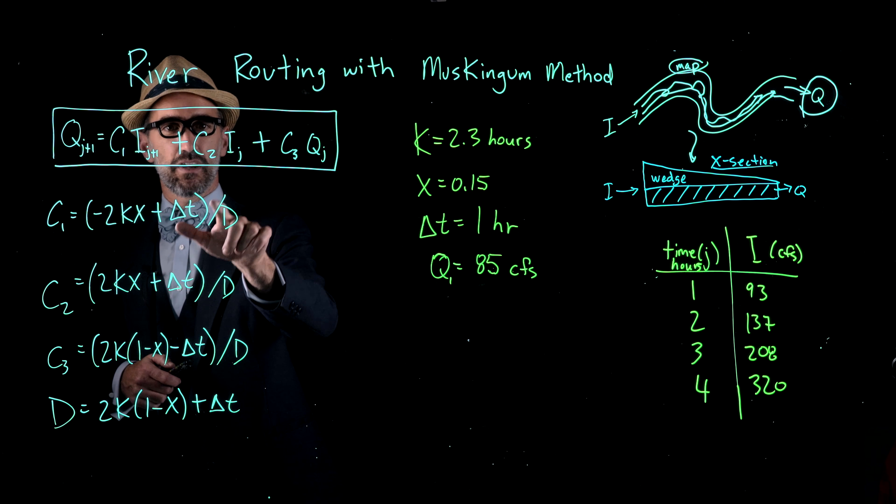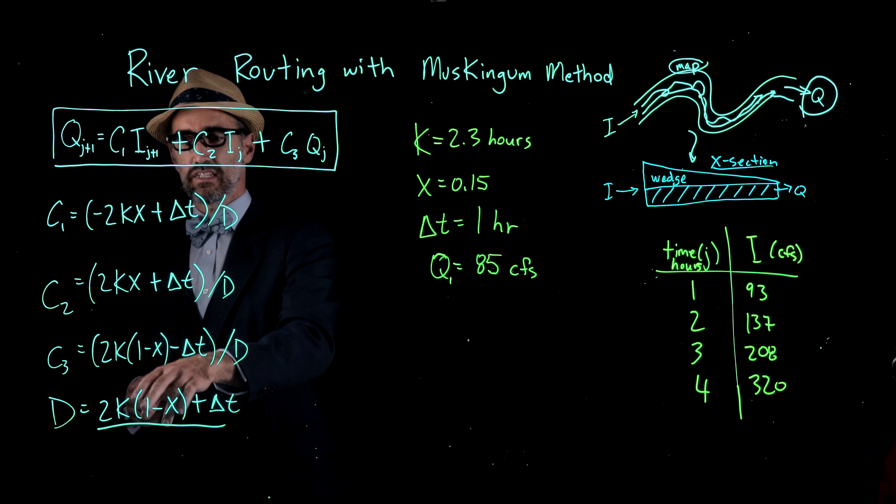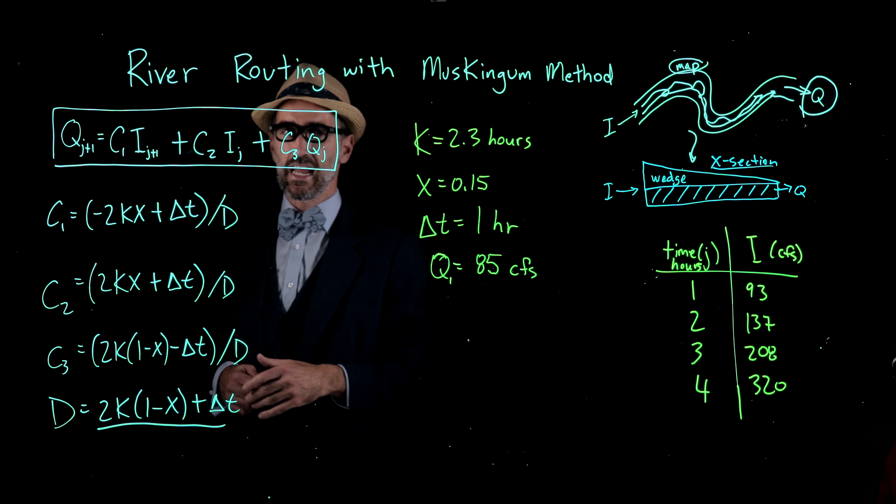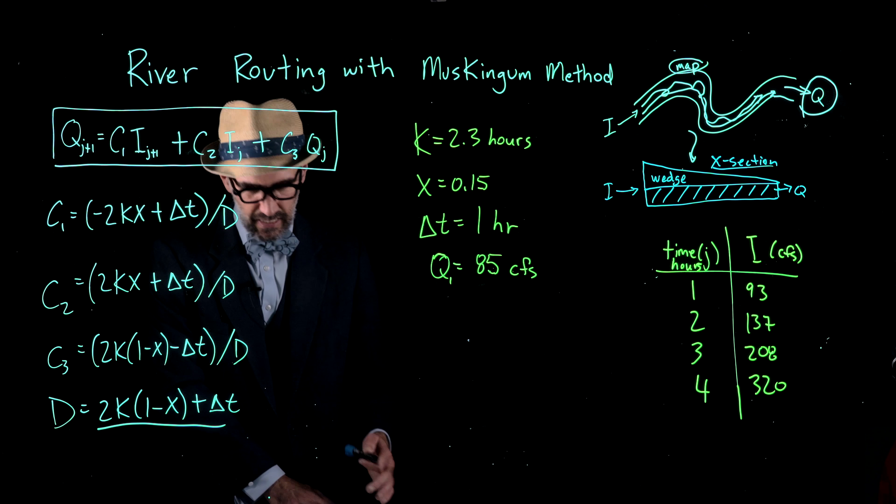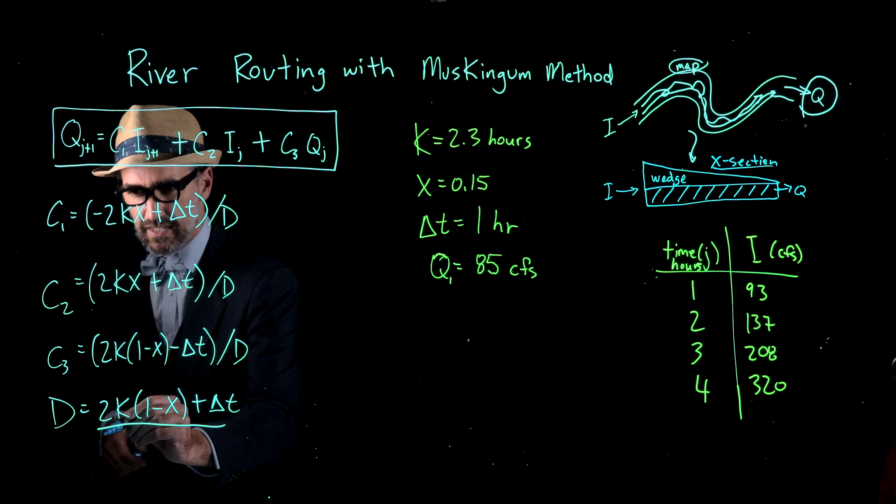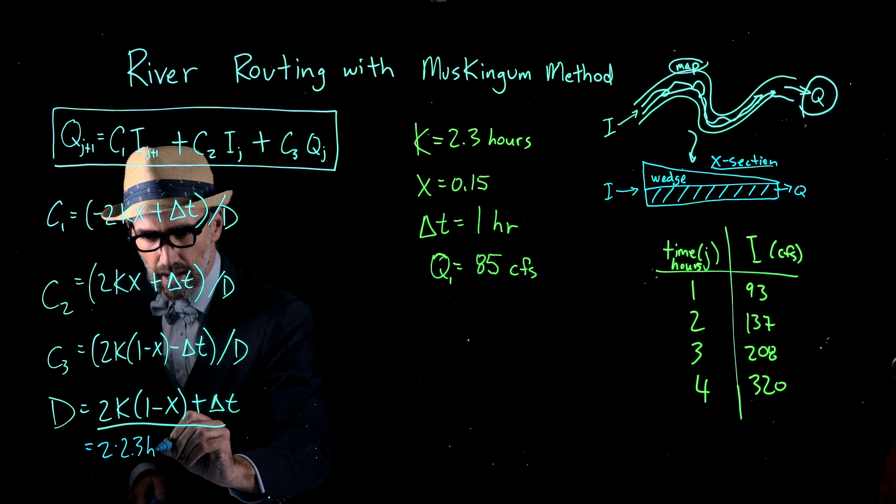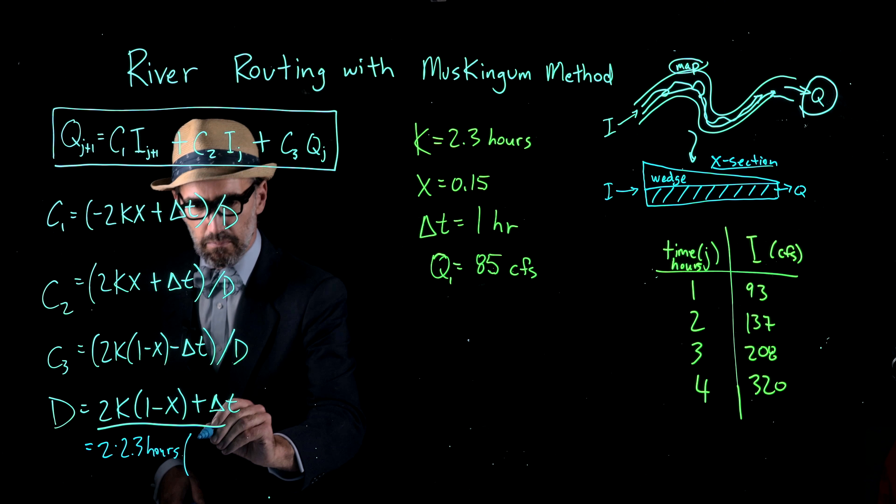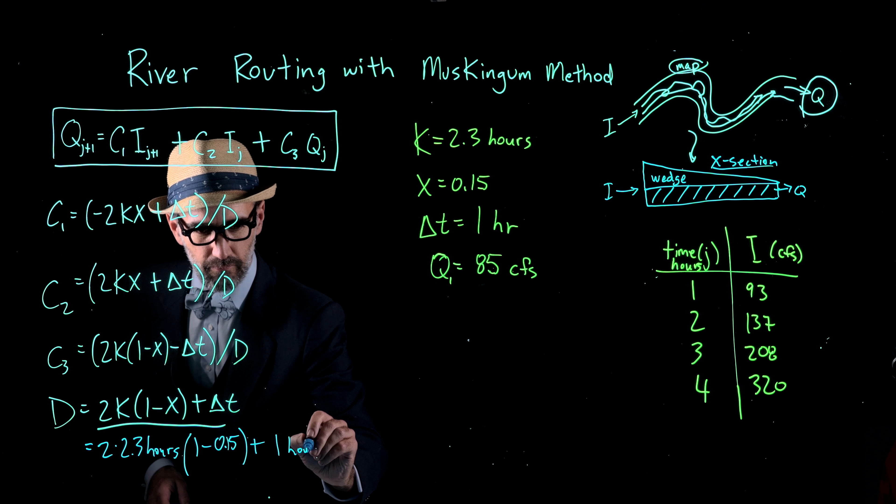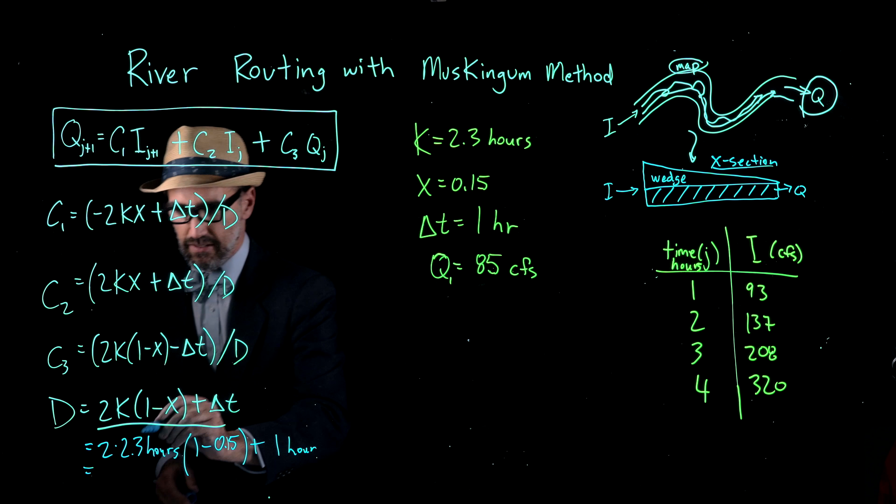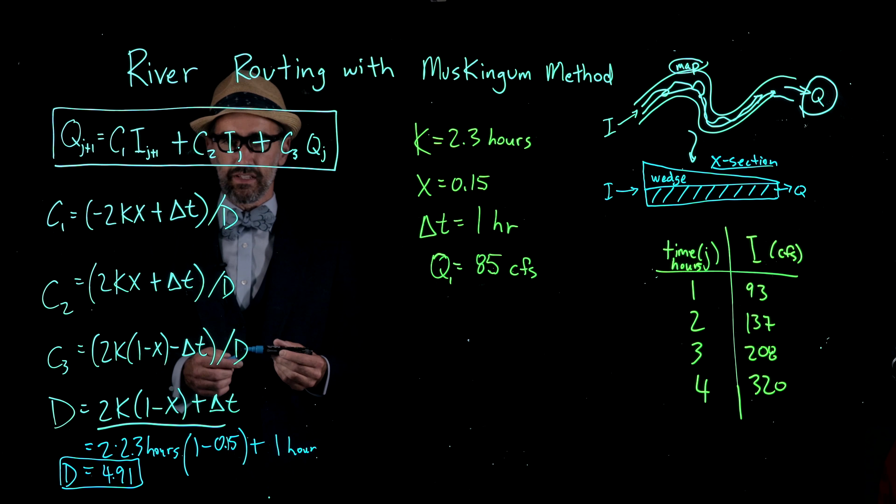Each of these coefficients have a denominator of D, so that's the first important thing to calculate. All of these C1, C2, C3 use these input parameters of K, X, and delta T in different ways. First, solving for D, we have D equals 2K where K is 2.3 hours, so 2 times 2.3 hours multiplied by 1 minus 0.15 plus our delta T of 1 hour. That results in 4.91, so that's our D value that we use in all the other calculations.